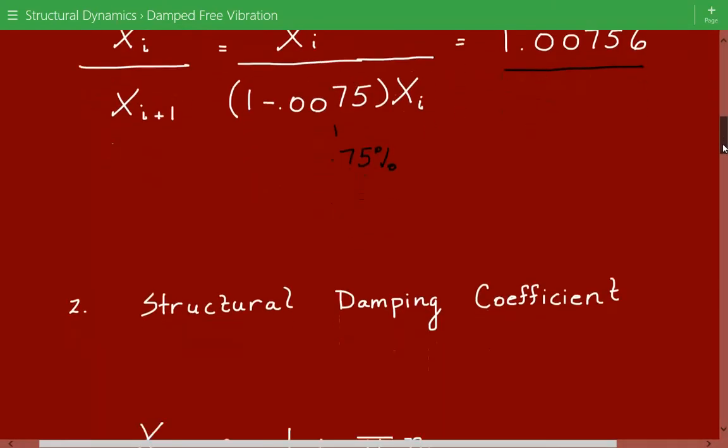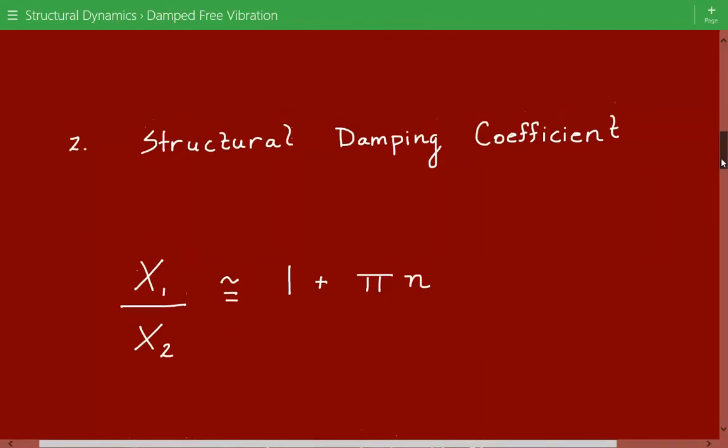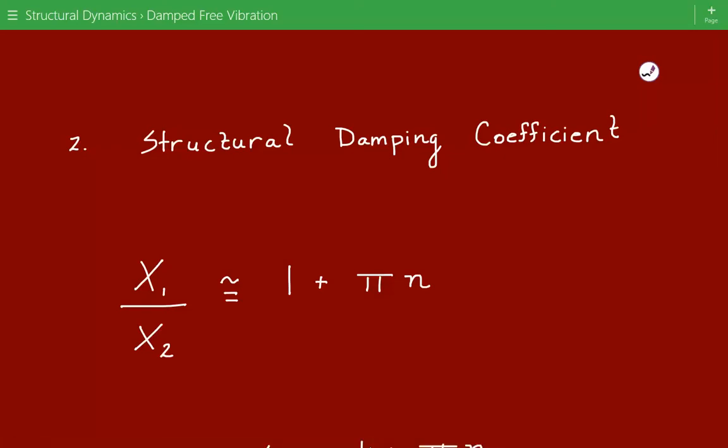Next, we can calculate the structural damping coefficient based on this relationship that the ratio of the successive amplitudes is approximately equal to 1 plus pi times eta. And eta is the structural damping coefficient.